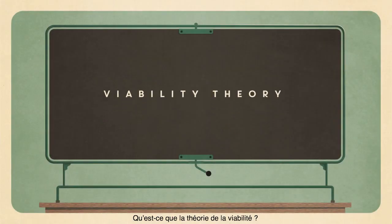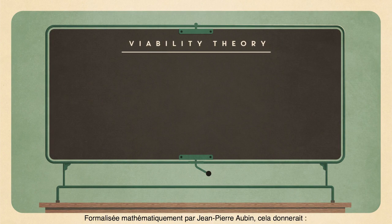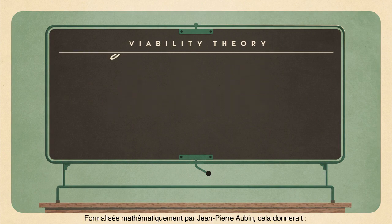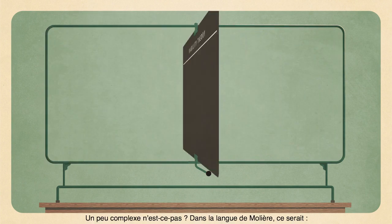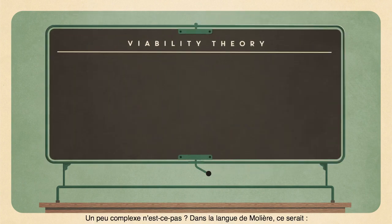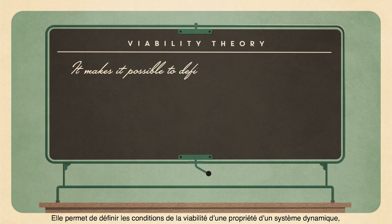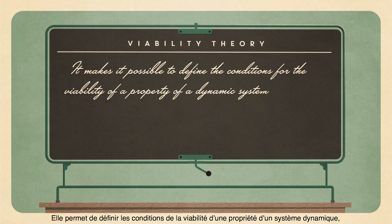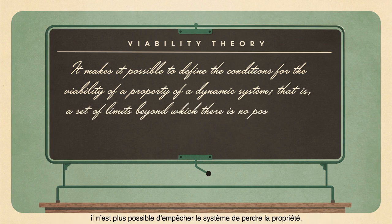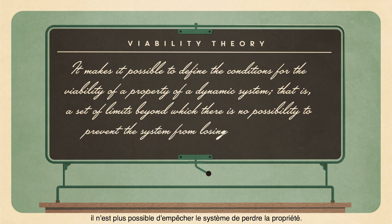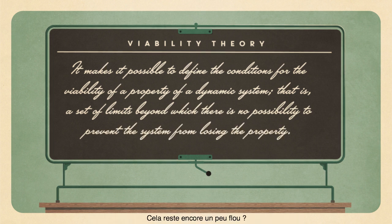What is viability theory? The theory was mathematically formalized by Jean-Pierre Robin, and it looks like this — a bit complicated, isn't it? In plain English, it makes it possible to define the conditions for the viability of a property of a dynamic system. That is, a set of limits beyond which there is no possibility to prevent the system from losing the property.